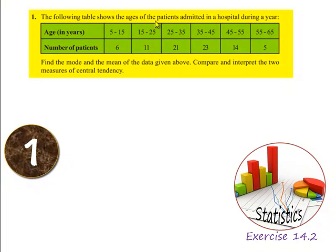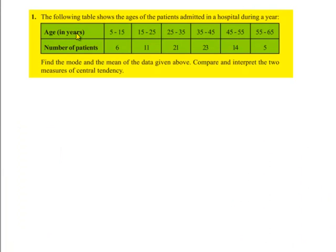The following table shows the ages of the patients admitted in a hospital during a year. Ages were given in the form of group data and number of patients as frequencies. Find the mode and the mean of the data given above. Compare and interpret the two measures of central tendency.